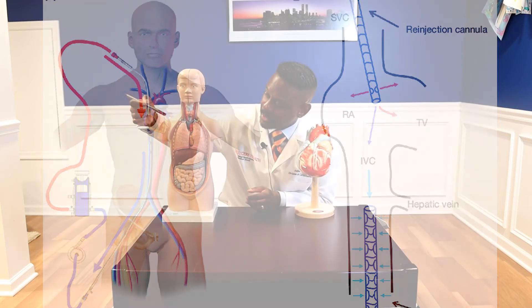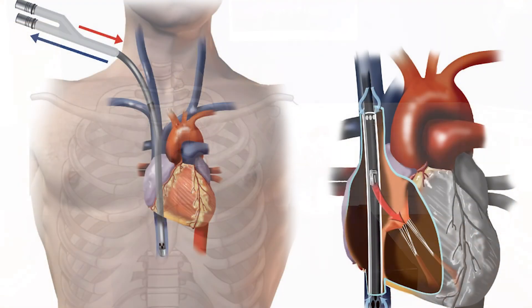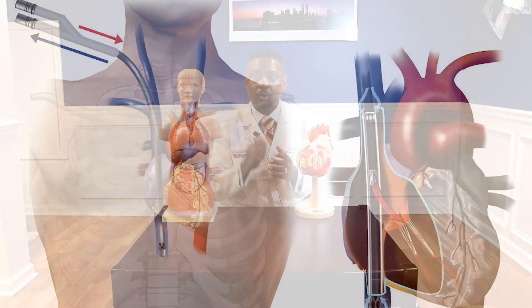One approach goes from the internal jugular vein, through the superior vena cava, into the heart, with another cannula going from the femoral vein into the heart. But the more common approach is to use a single cannula going from the superior vena cava into the right heart and into the inferior vena cava — with two lumens that allow us to both add and remove oxygenated blood.